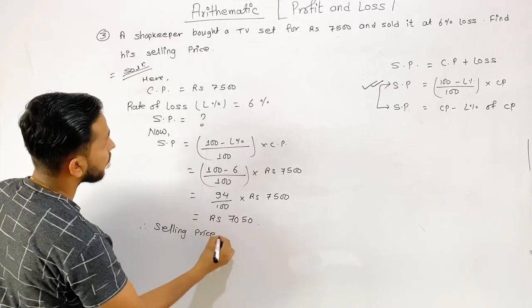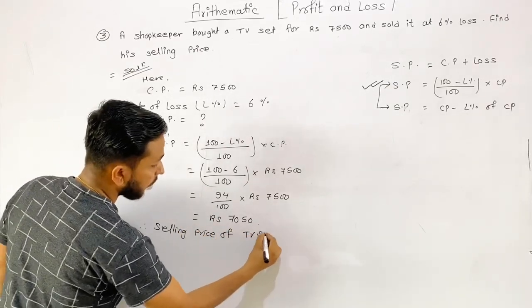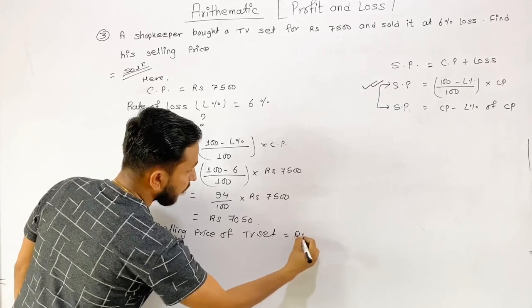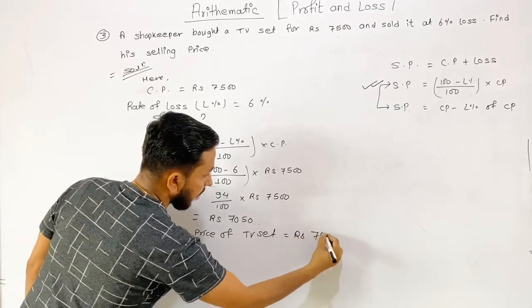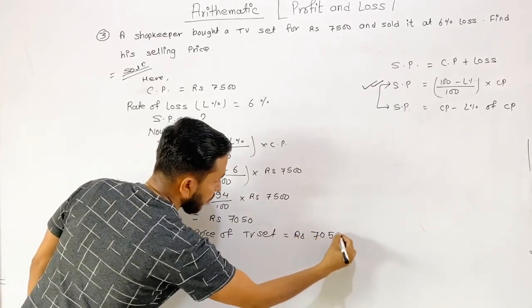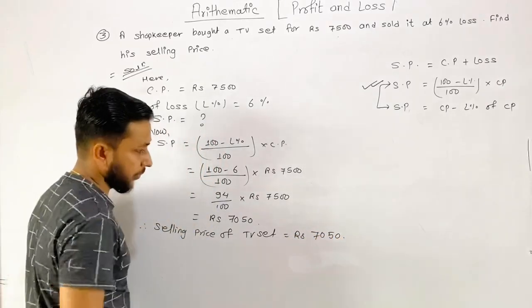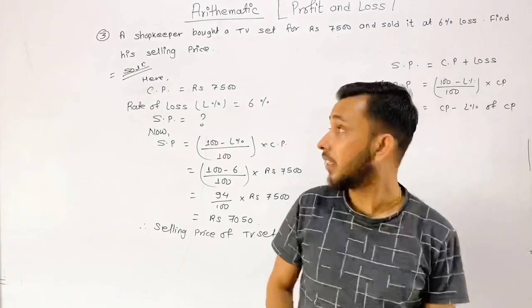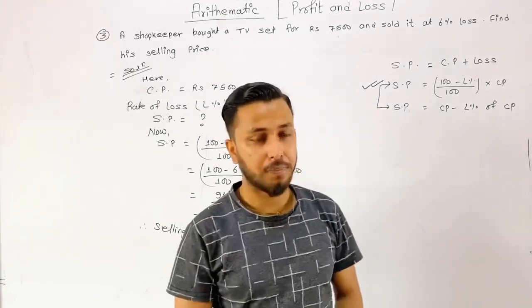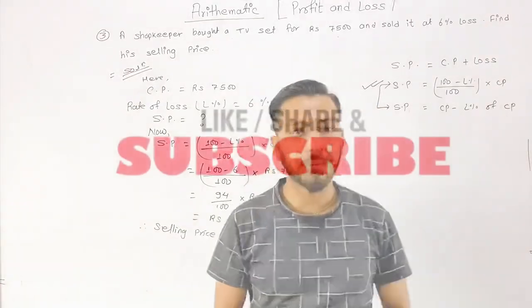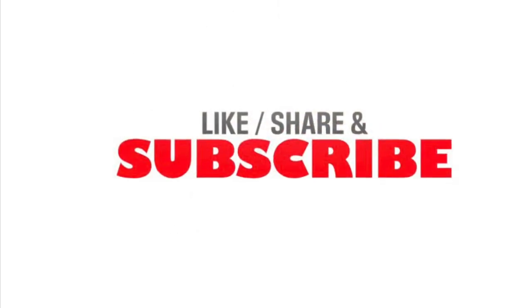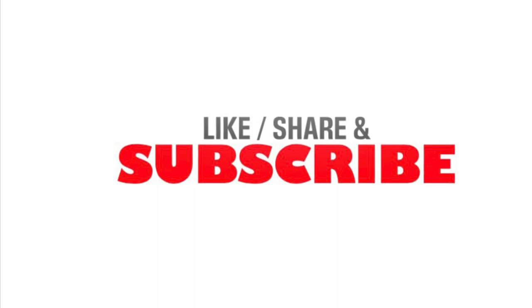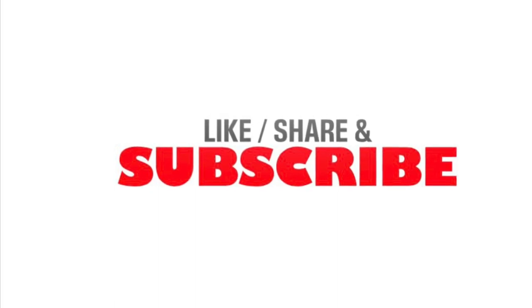Therefore, selling price of the TV set equals Rupees 7,050. That was the solution of the third problem. Thank you.